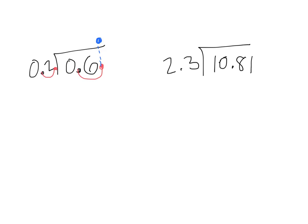In the second one, we want 2.3 to become a whole number, so we move the decimal once so that it's 23. In our dividend, we also need to move it once. And then for our quotient, that decimal will go straight up right here.